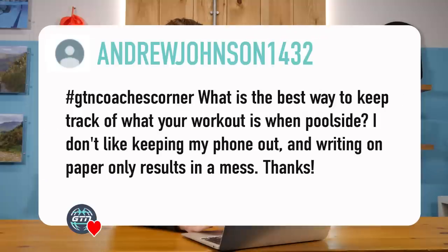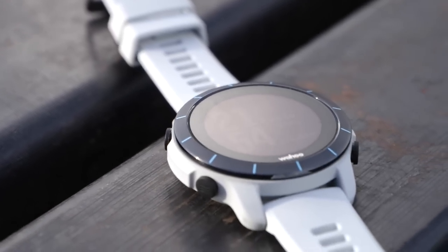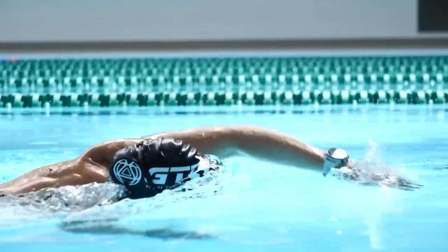Andrew Johnson asks: what is the best way to keep track of your workout when on poolside? He doesn't like keeping his phone out and writing on paper only results in a mess. I'd say a whiteboard — it's low tech but it works. You can also use a sports watch these days; they're pretty good. Set it to lap swimming and it will disable GPS and account for the fact that you're stopping — it won't count your pauses at the end of lanes as swimming time. Afterwards you can go into TrainingPeaks or whatever software you use and adjust the distances.